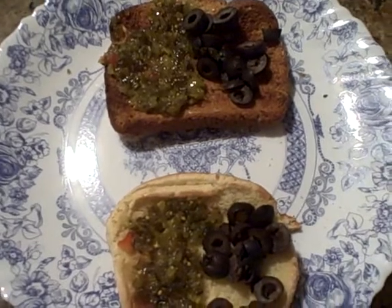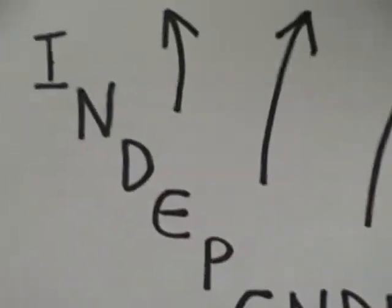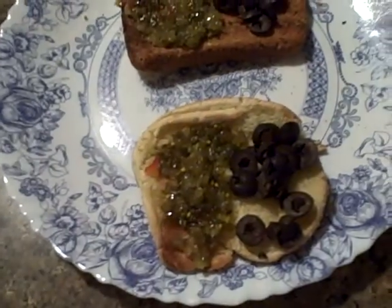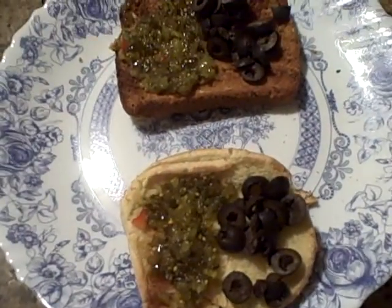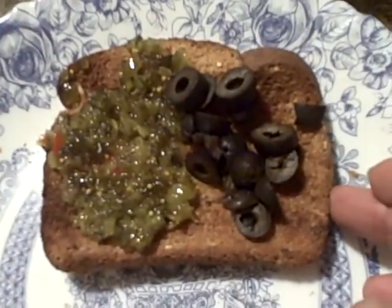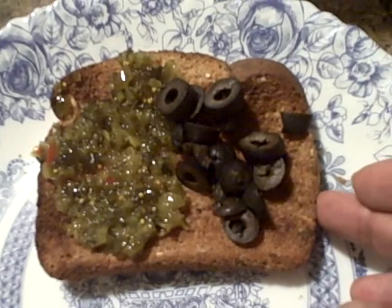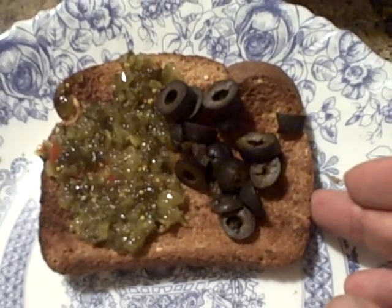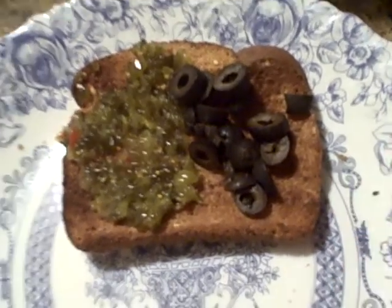Then we have several independent variables that we're going to measure or manipulate. One independent variable is the type of bread used. This is the sesame seed bun, and here we have a seven grain whole wheat and other grain bread. So that's one variable, one difference between the sandwiches.